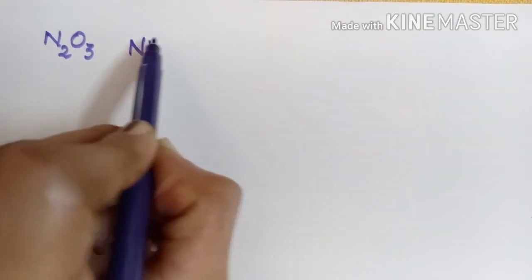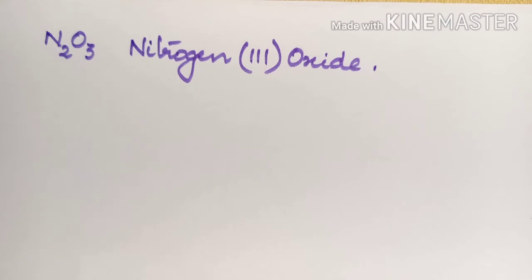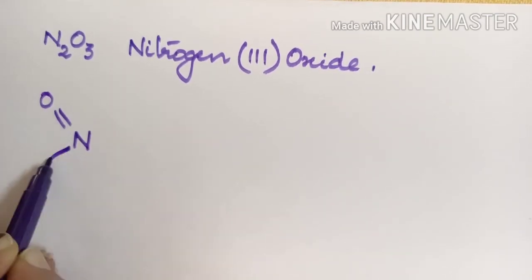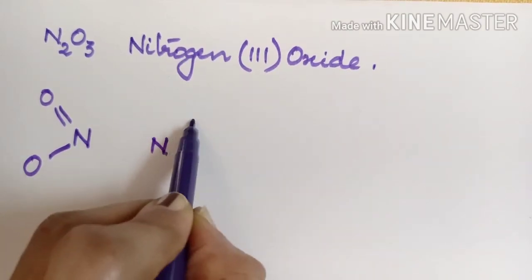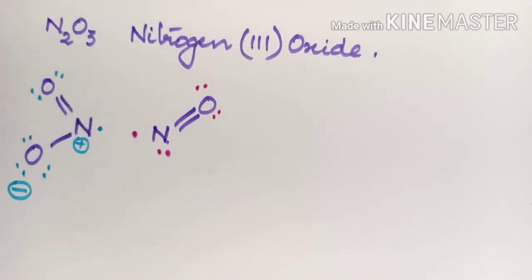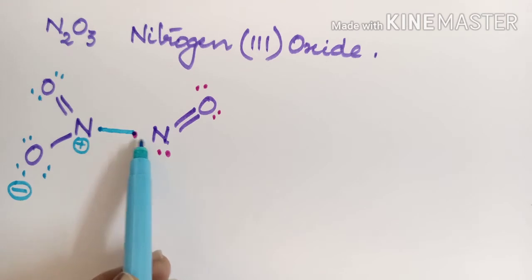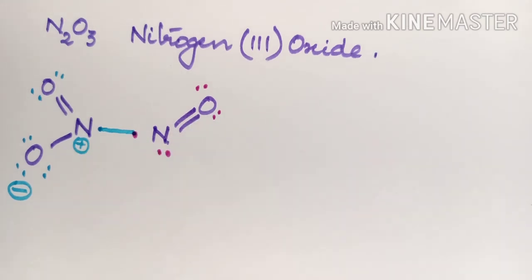The next molecule is dinitrogen trioxide, N₂O₃, otherwise named nitrogen(III) oxide. It is a blue colored solid which is acidic in nature. The easiest way to draw the structure is to draw nitrogen dioxide and nitric oxide side by side. Both are free radicals, so they combine together — the free radicals form a bond giving the structure N=O–O–N=O.